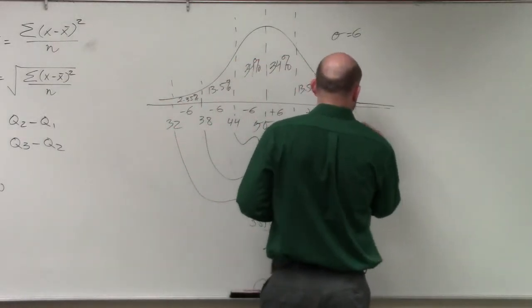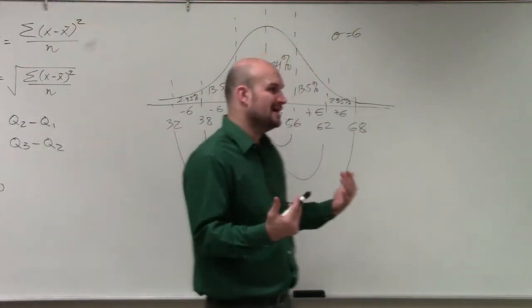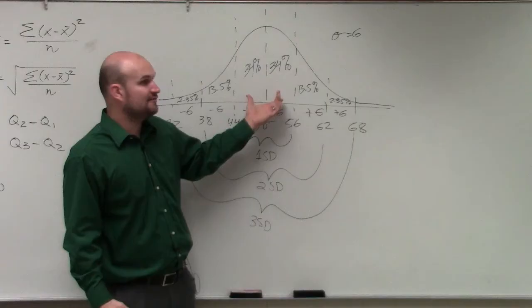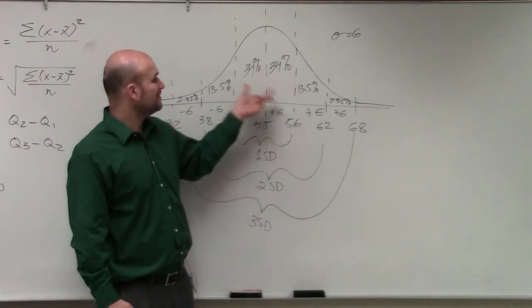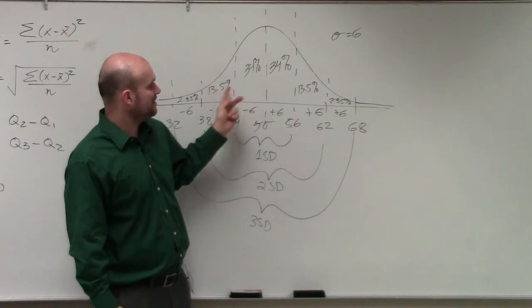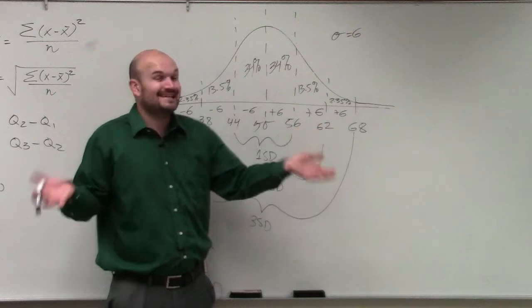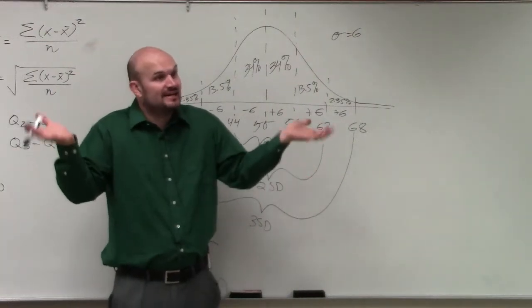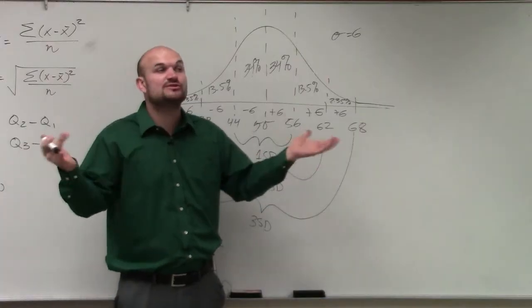Now, the problem with the standard distribution curve is, it's really nice that when we have the mean, within the first standard distribution, it's 68%. 34 plus 34, right? Within the second distribution, it's going to be 68 plus 27, right? Which is 95%. So that's saying 95% of your data. If you have data and it follows normal distribution, 95% of your data is within two standard deviations.